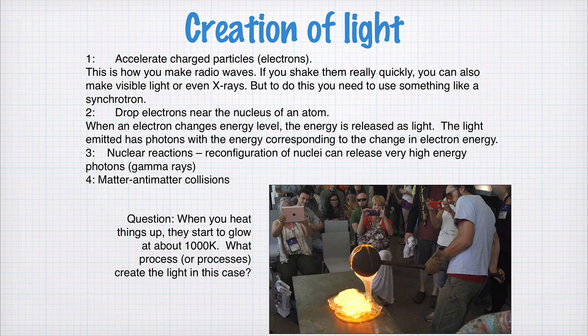So here's a little thing to ponder. When you heat something up, like this case it's glass, it's very hot. When you heat something up to about a thousand degrees or hotter, you start to see it glow. In this case of glowing glass, what process or processes create the light?